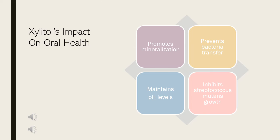When Streptococcus mutans infects our mouth, it lowers the pH, making the environment more acidic, which leaves the teeth susceptible to decay. Xylitol helps by neutralizing the pH, leaving bad bacteria to starve and die out as long as xylitol remains present. With lower levels of acidity and bacteria, the teeth are able to fortify weakened enamel and reverse decay already present.